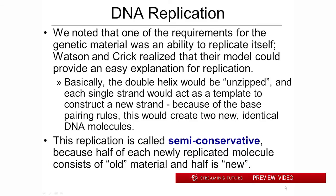There's a lot on this slide, but I wanted to connect it with Watson and Crick's model of DNA structure. Remember, structure and function are always intertwined — you really can't take them apart. One of the requirements for the genetic material was that it had to be able to replicate itself. It was known for a long time that when a cell copies itself, both of the two new cells have a full complement of chromosomes, so somehow the DNA has to be replicating itself. Watson and Crick realized that their model could provide a relatively easy conceptual explanation for how DNA replicates.